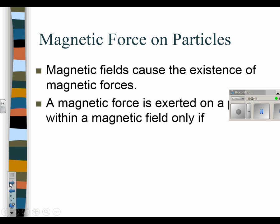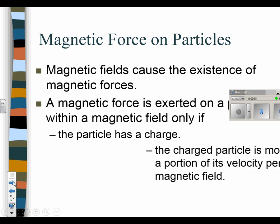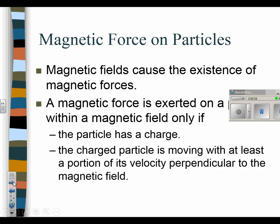But a magnetic force is exerted on a particle within a magnetic field only if the particle has a charge, so it has to be positive or negative. It can't be neutrally charged. And the charged particle has to be moving with at least a portion of its velocity perpendicular to the magnetic field. So that's where we have to have it at right angles, and at least it has to have a component that is perpendicular to the magnetic field.